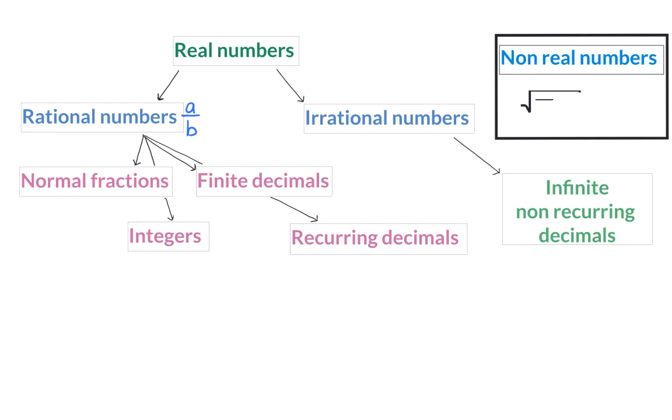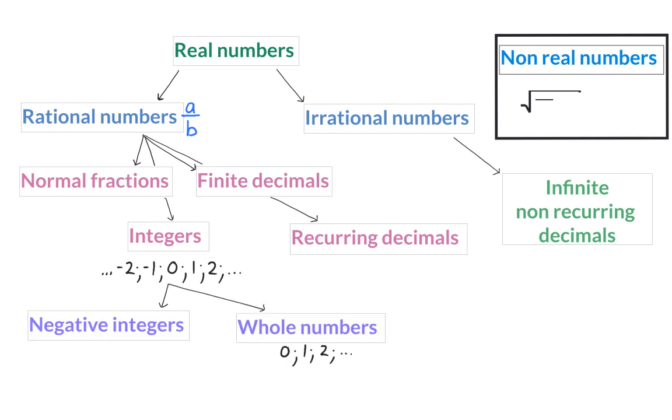Back with real numbers, we can now divide our integers up into negative integers and whole numbers. And then whole numbers can be divided up into zero and natural numbers. It is important to also know the symbol that is used for each of these numbers.